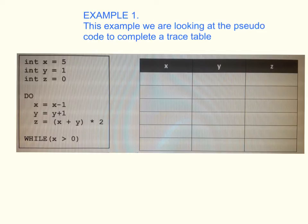Okay, so in this first example, we do trace tables to determine the outputs of the following pseudo code, or it could be a flowchart. So what we do is we do each trace table line across here, one at a time.